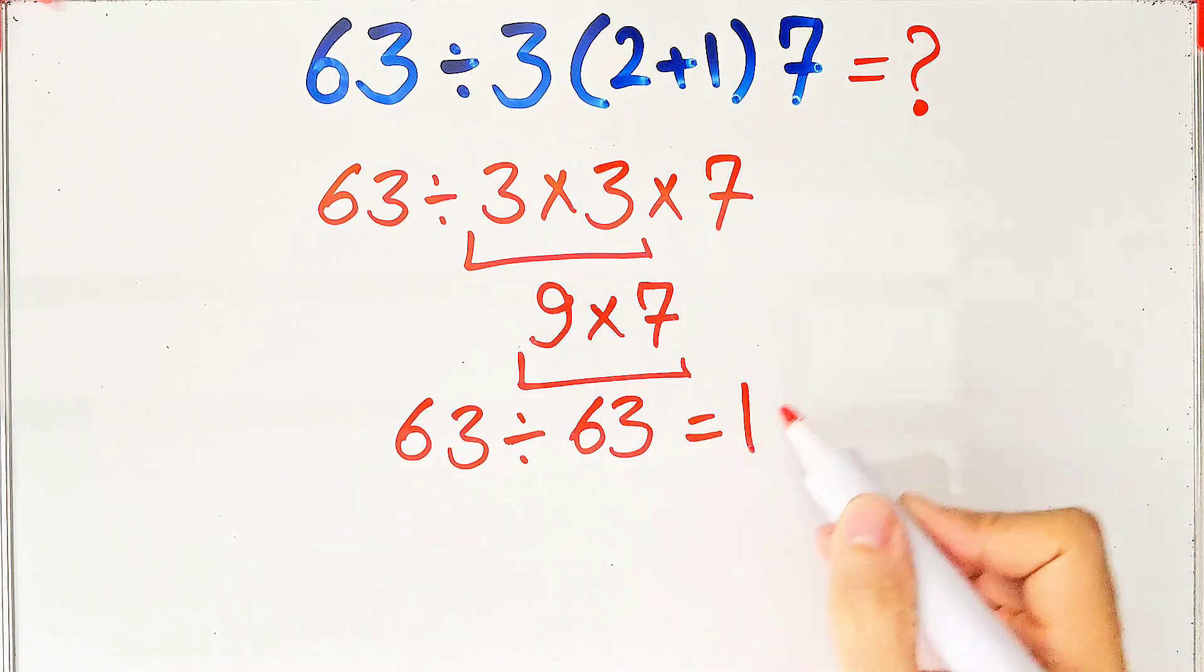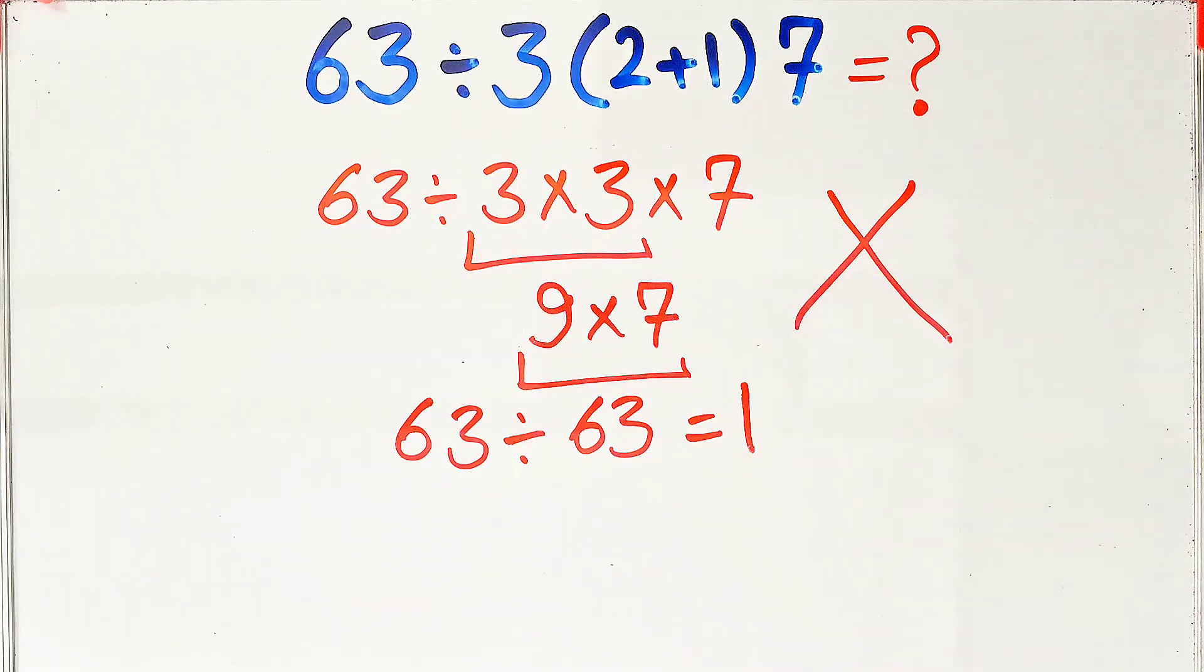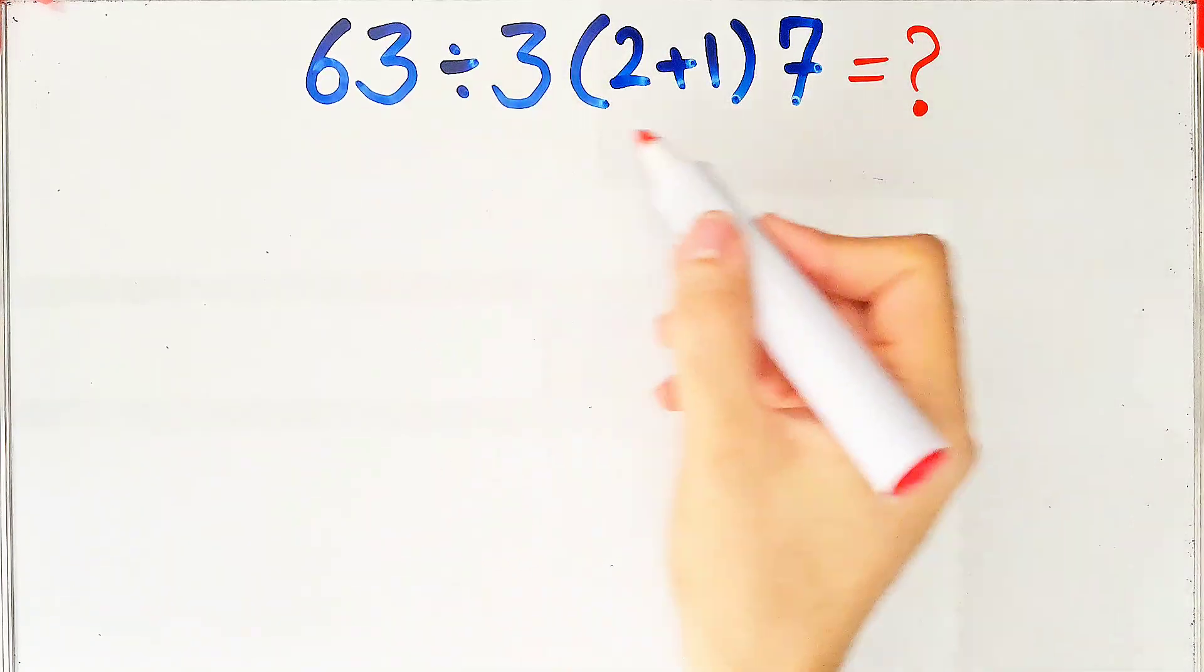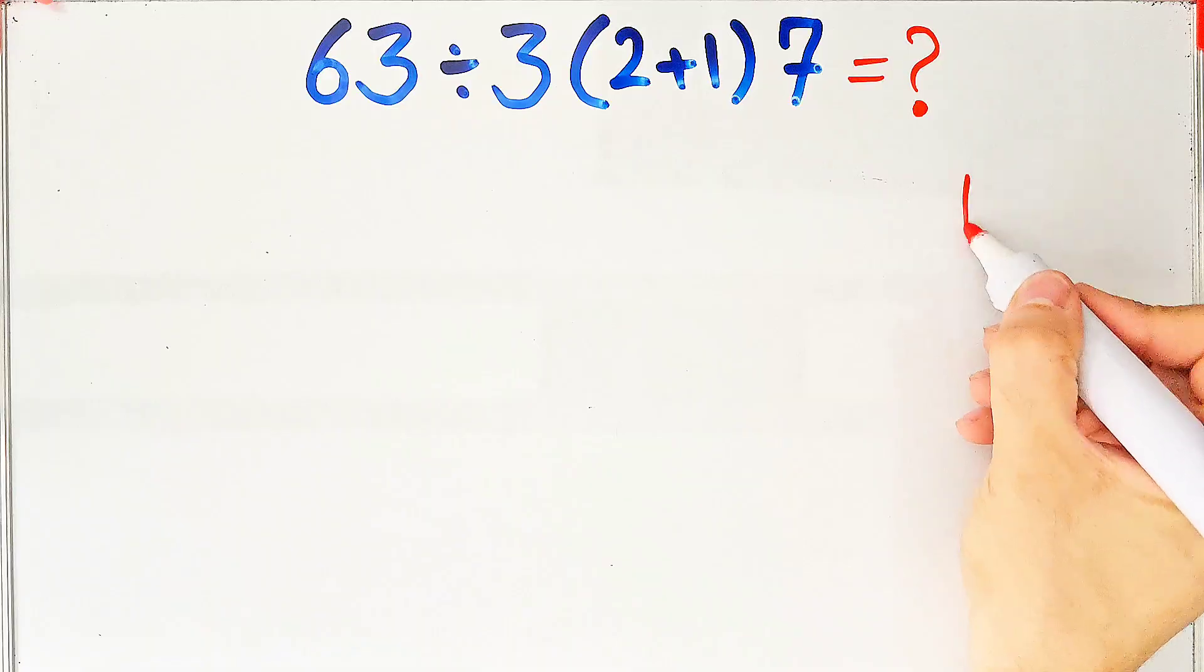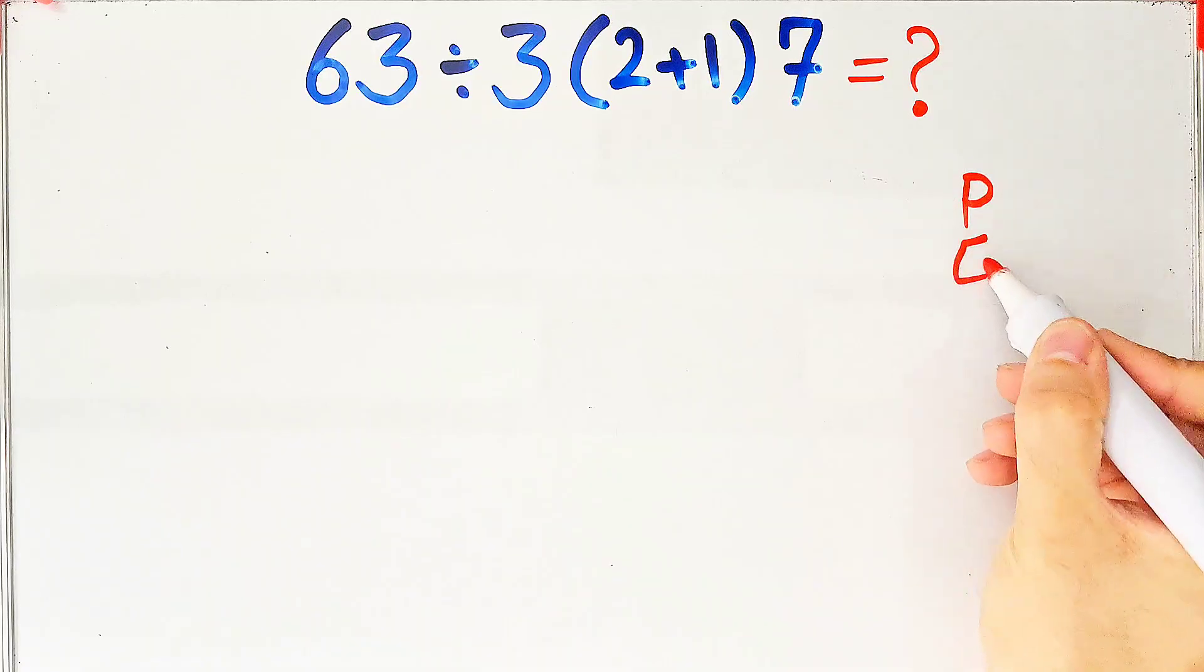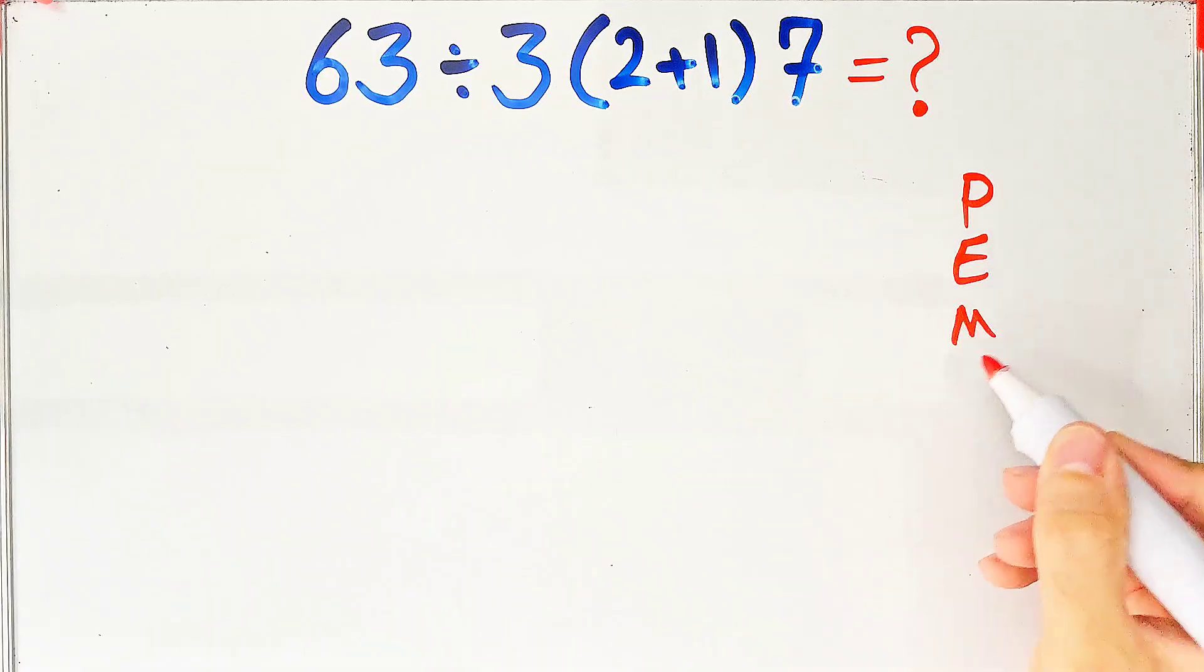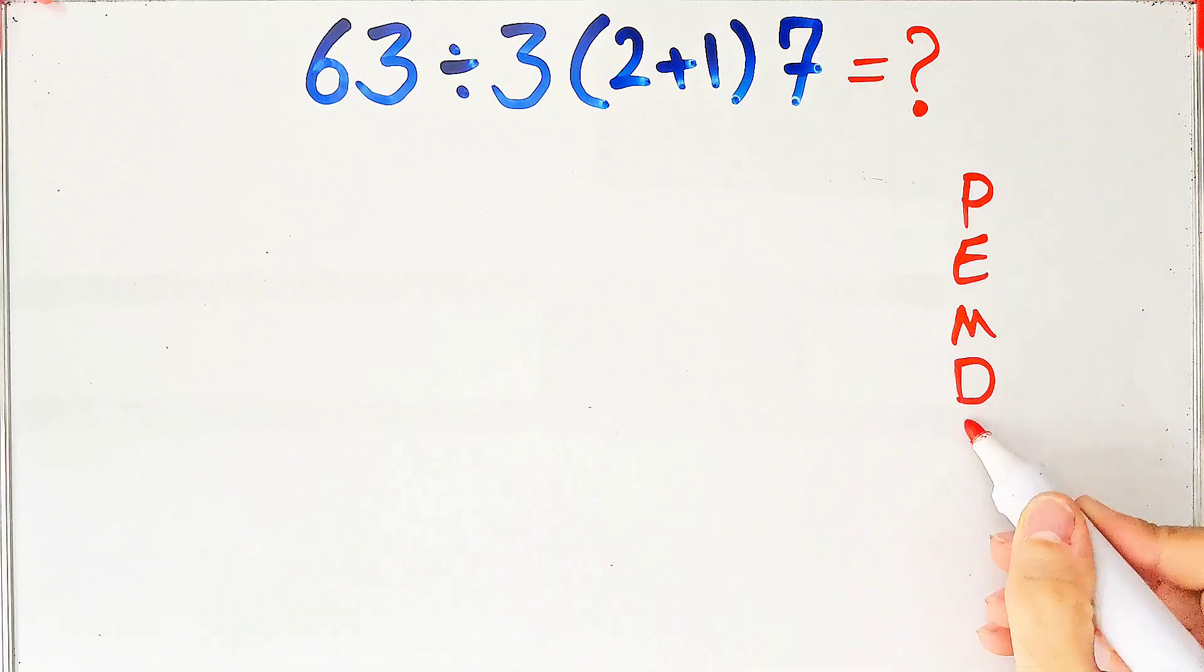Let's solve this question step by step together. To solve this question, we need to follow the order of operations, which is PEMDAS. PEMDAS shows the priority of mathematical operations. If you don't pay attention to this rule, you get the wrong answer.